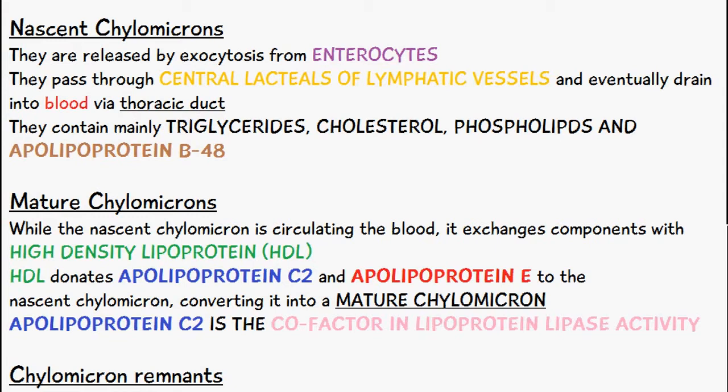The structure of the nascent chylomicron at this stage contains triglycerides, cholesterol, phospholipids, and apolipoproteins. The apolipoprotein present is known as apolipoprotein B48, and this is the apolipoprotein present on the nascent chylomicron when it's initially formed.